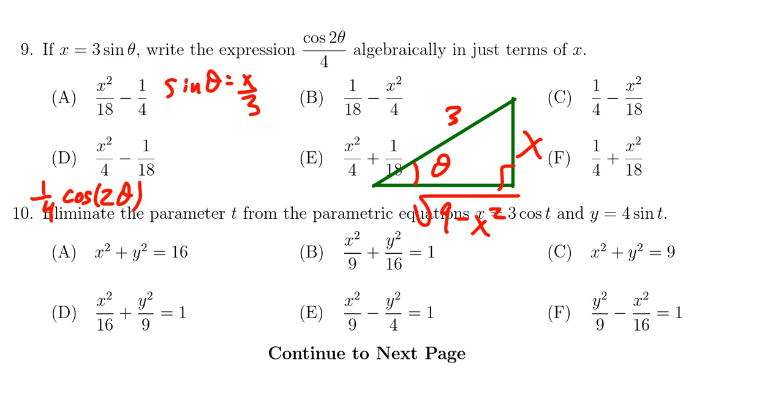Cosine of two theta, well the double angle identity for cosine we could use cosine squared minus sine squared or there's a couple variations. Since we know sine I'm actually going to prefer to use that one right now: one-fourth times one minus two sine squared theta.